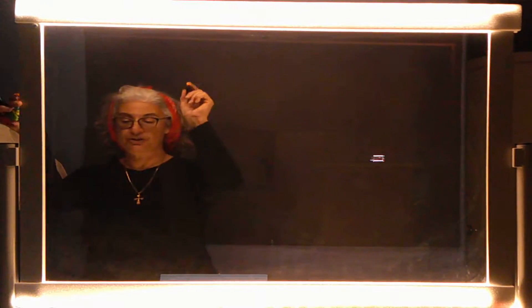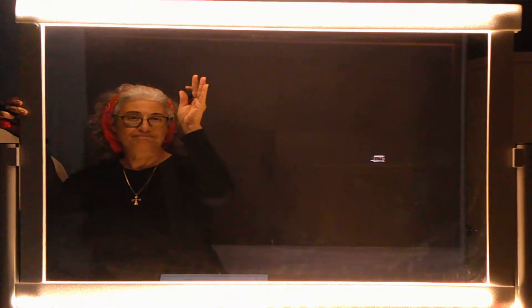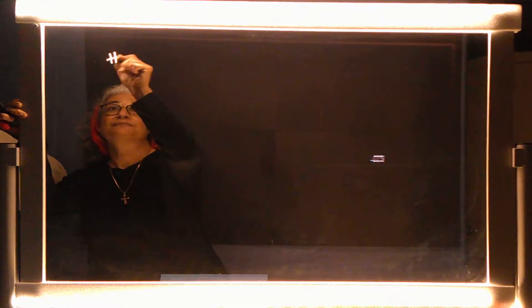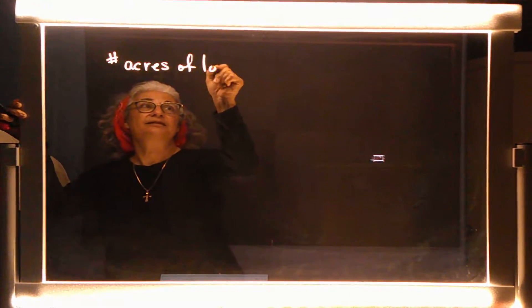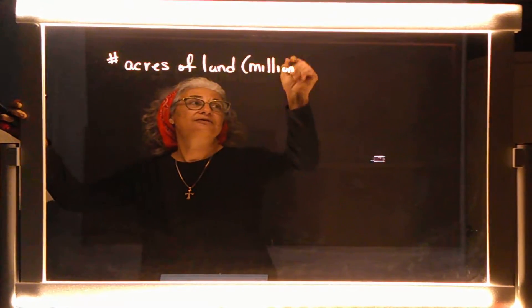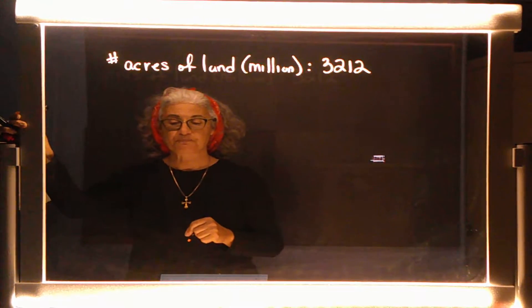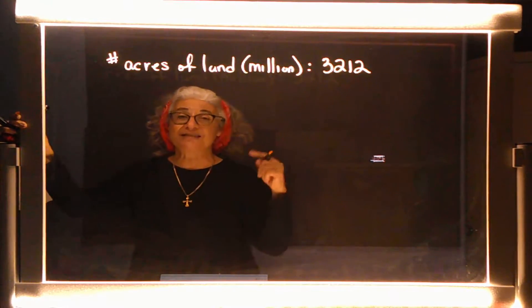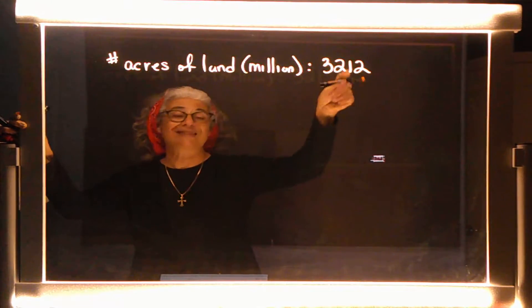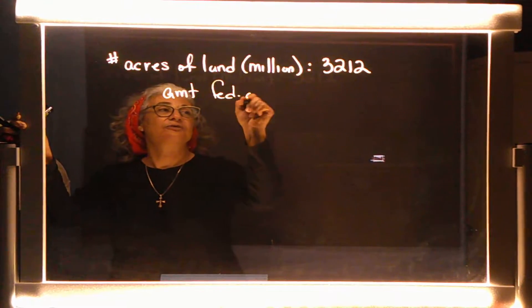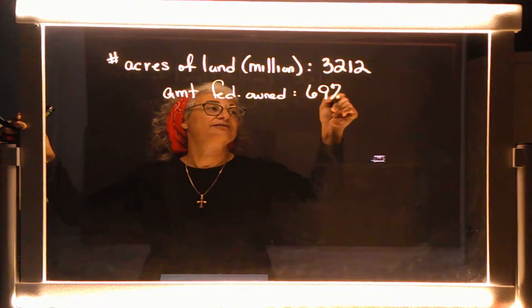They want us to find the number of acres of land that are NOT federally owned. Write down the information nice and neat. The Western state detail is just fluff — it makes the story sound good. What matters is the number of acres of land: 3,212 million acres. And 69% of that land is federally owned.